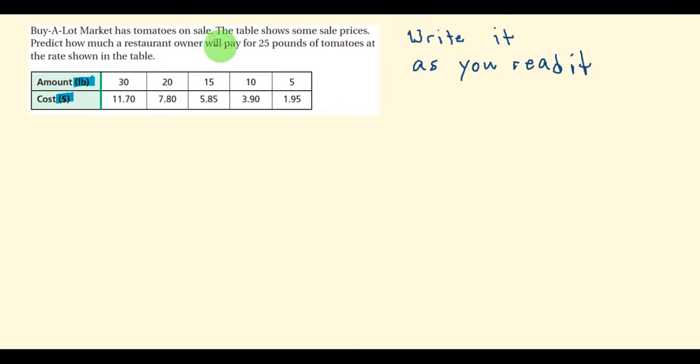Predict how much a restaurant owner will pay. There's our indicator for price. So I know that when I write my ratio, price will come first.